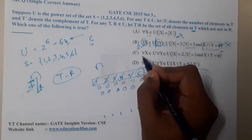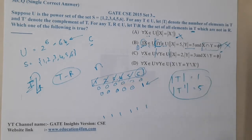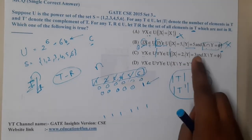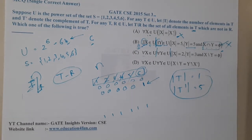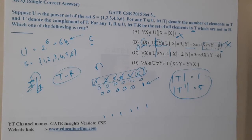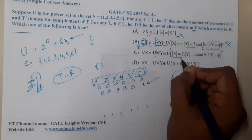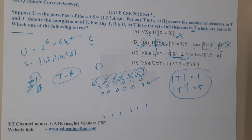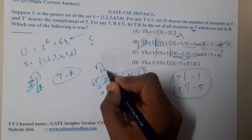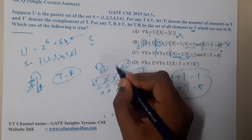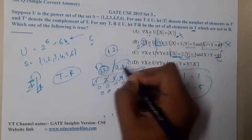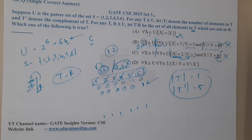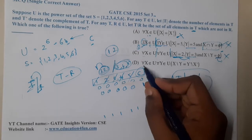Option C says: for all x, y belonging to U, if |x| = 2 and |y| = 3, then |x/y| = 5. But consider x = {1,2} and y = {3,4,5} — they share no elements. Then x/y (x minus y) = {1,2}, which has size 2, not 5. This counterexample shows Option C is also wrong.